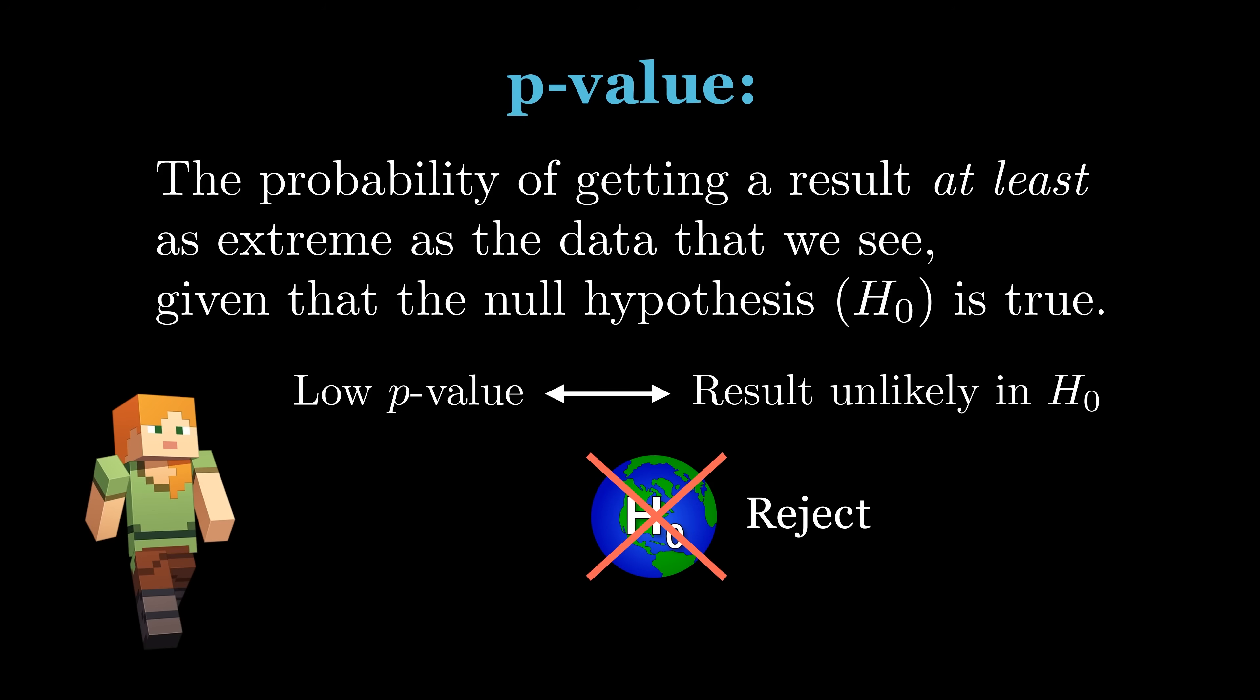It's standard in research to reject the null hypothesis if the p-value is less than 0.05, or 5%. But why 5%? Maybe you're a little more skeptical and prefer not to rule out the null hypothesis unless p is less than, say, 1%, and that's totally fine.